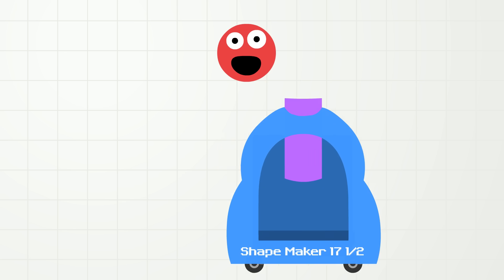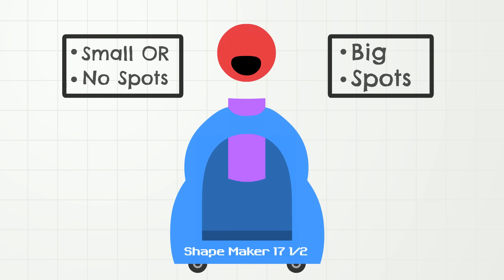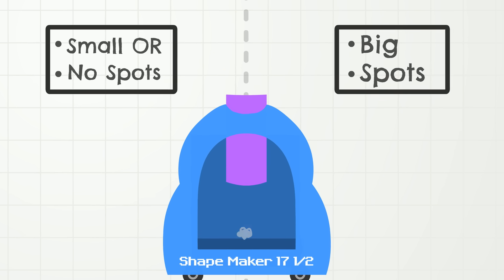Did you know that you can sort by more than one attribute? Oh, yes you can! This time the attributes are size and spots. So if the shape is big and has spots, it should go on the right side. And if the shape is small or doesn't have spots, it should go on the left side. Remember that the shape has to be both big and have spots to go on the right side. Okay, ShapeMaker 17 and 1 half, start!